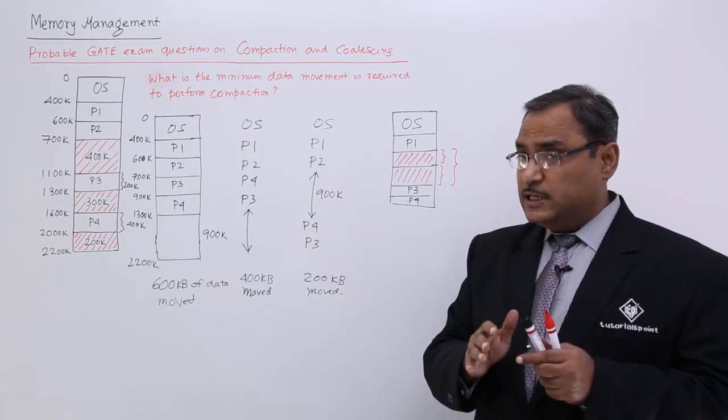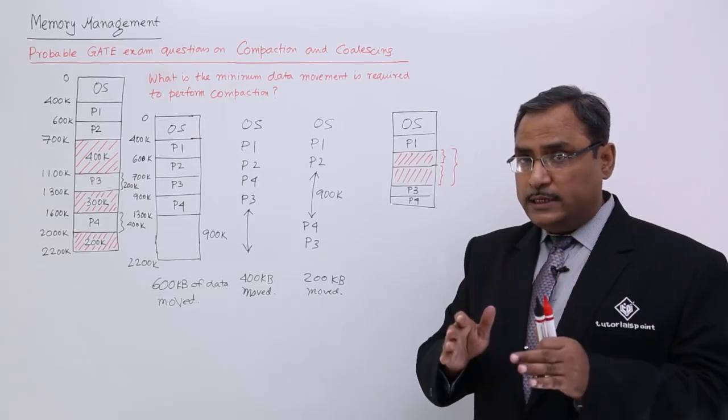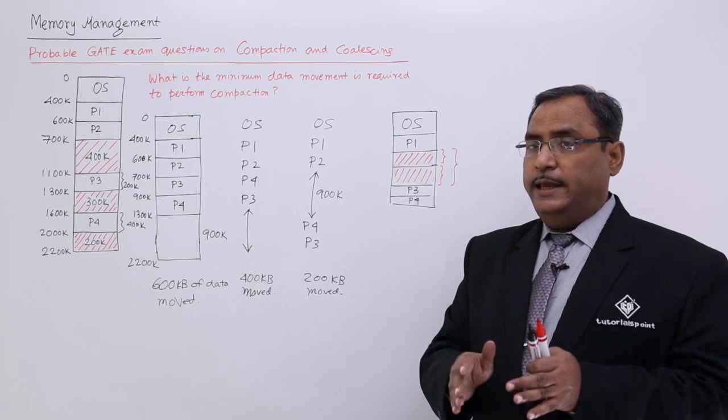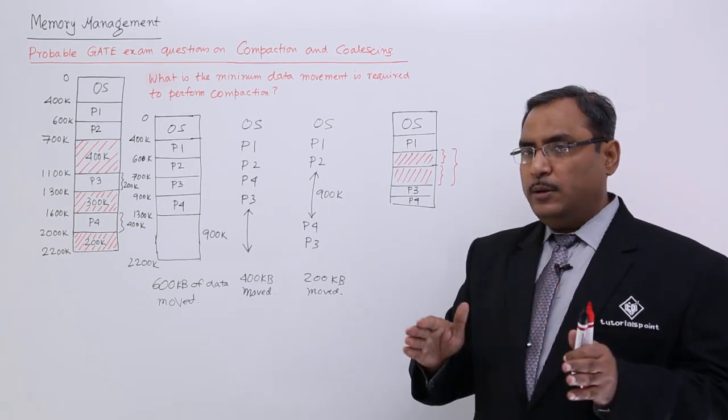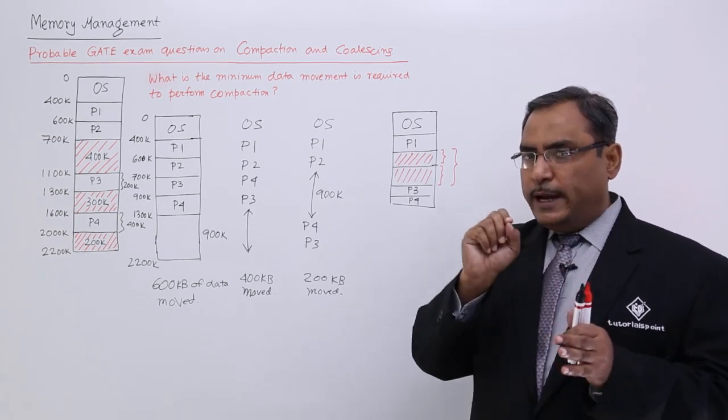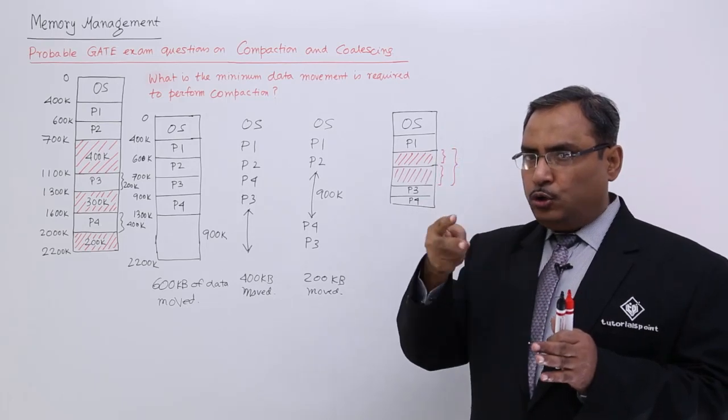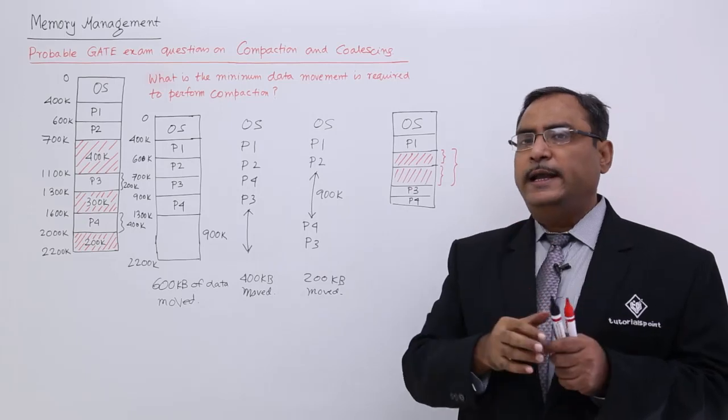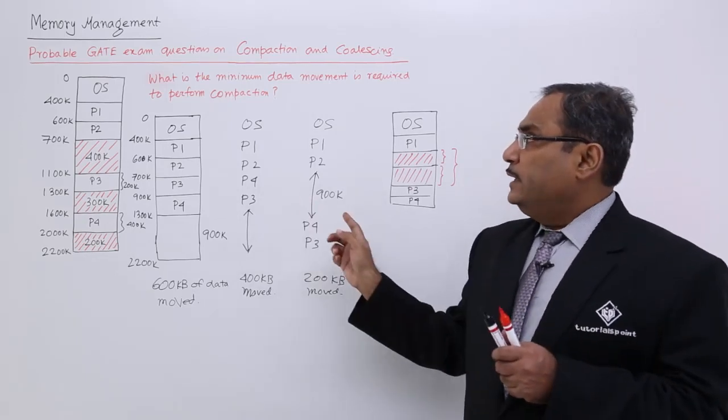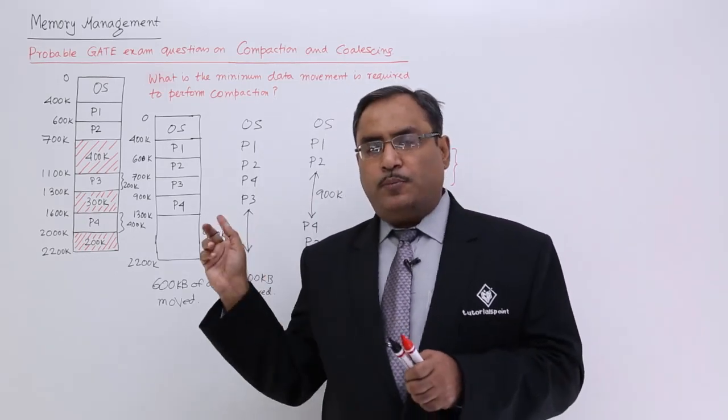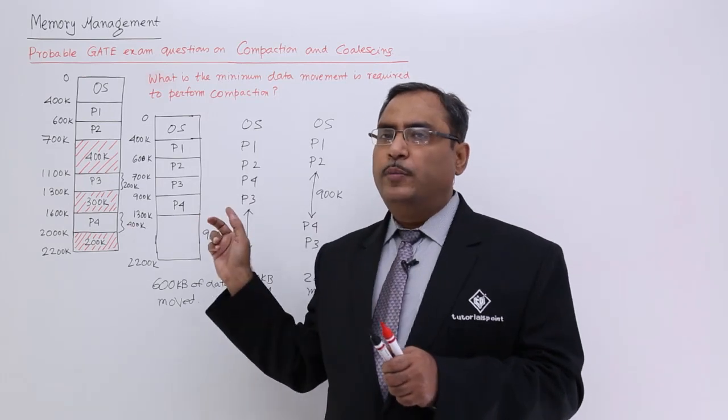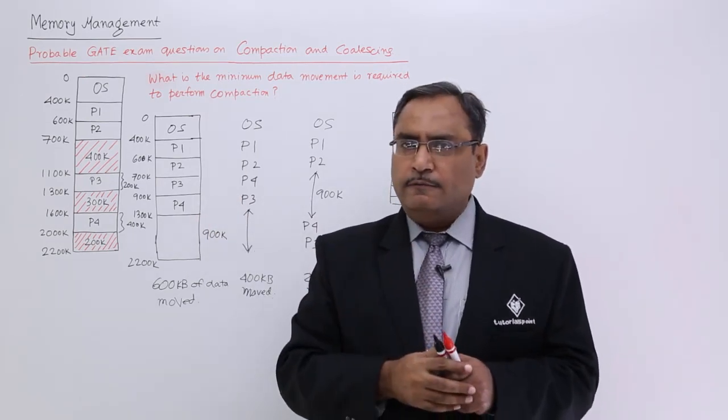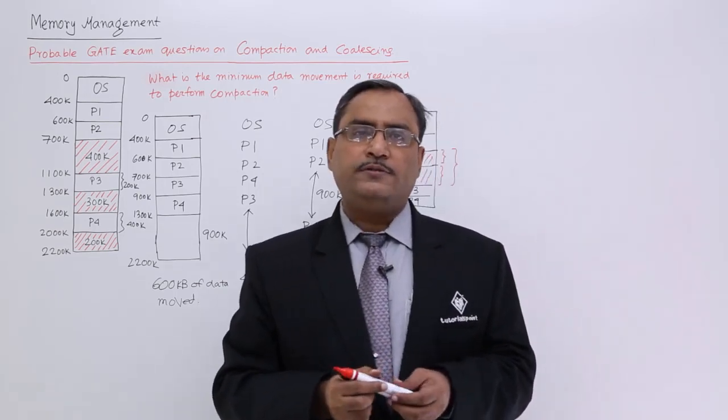So, the basic difference between compaction and coalescing is that, in case of compaction, data movement will take place. In case of coalescing, there will be no data movement will take place. Only it will be registered that these are not two free spaces adjacent, there is a contiguous free space. So, only it will be updated in the index. So, I think the conception is cleared. This sort of problems might be coming with the differing numerical values, but if your conception is clear, you can easily handle and face the music. Thanks for watching this video.